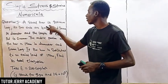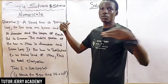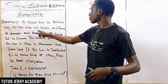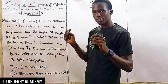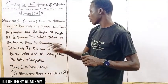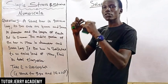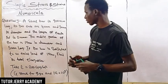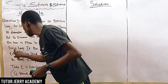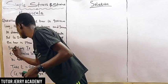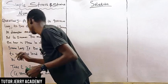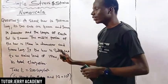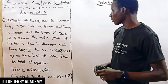Question number five. It says a steel bar has an overall length of 900 millimeters. It has two ends — 40 millimeters and 30 millimeters in diameter, and the length of each end portion is 200 millimeters. The middle portion of the bar is 500 millimeters long. If the bar is subjected to an axial load of 15 kilonewtons, we have to find the total elongation.